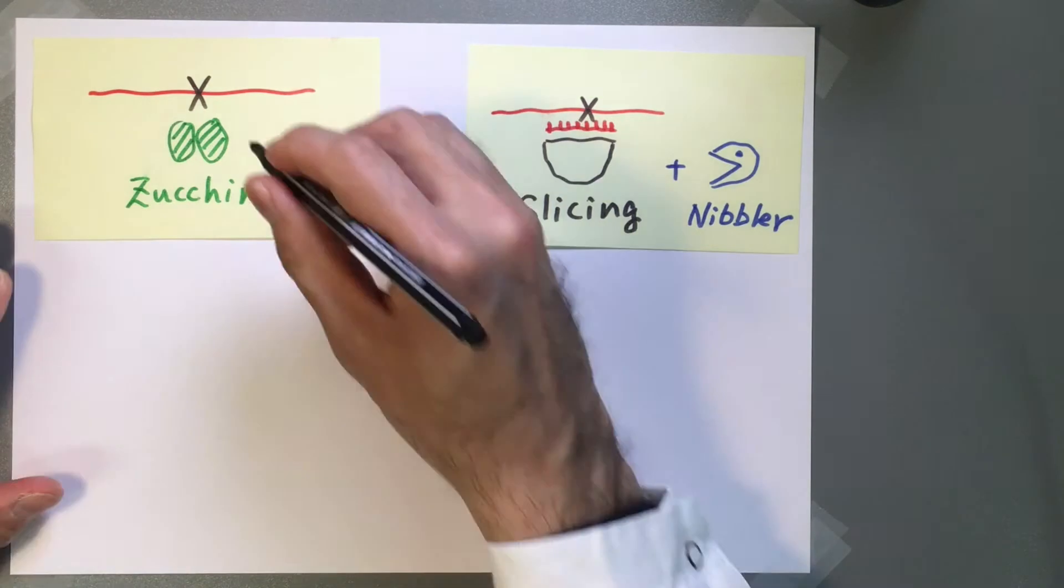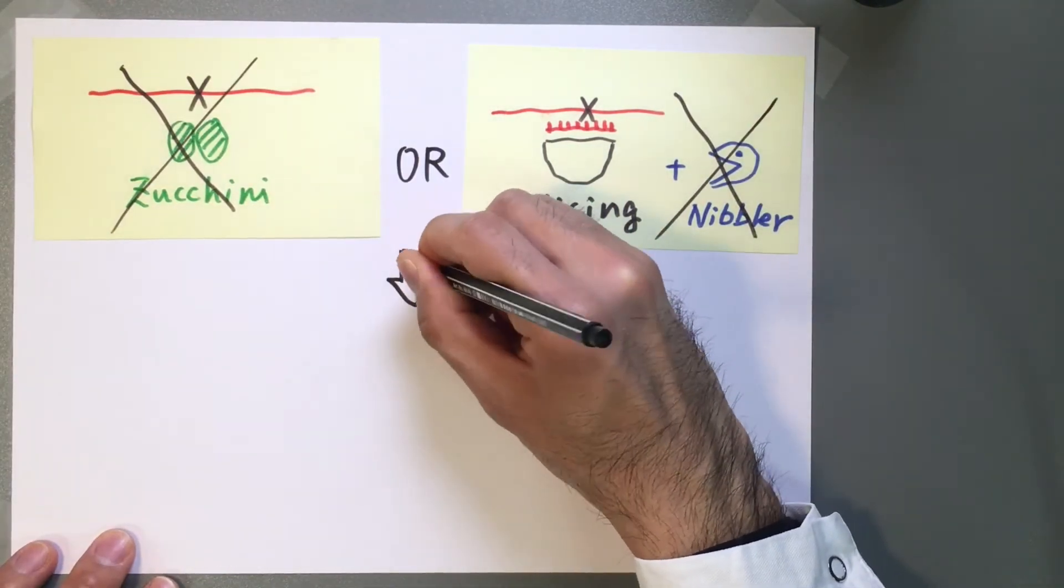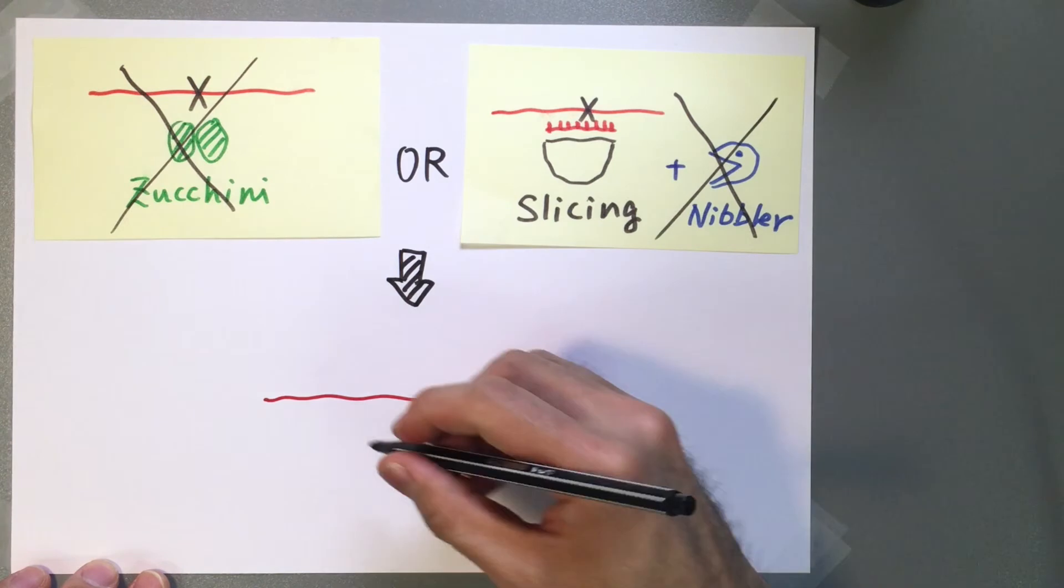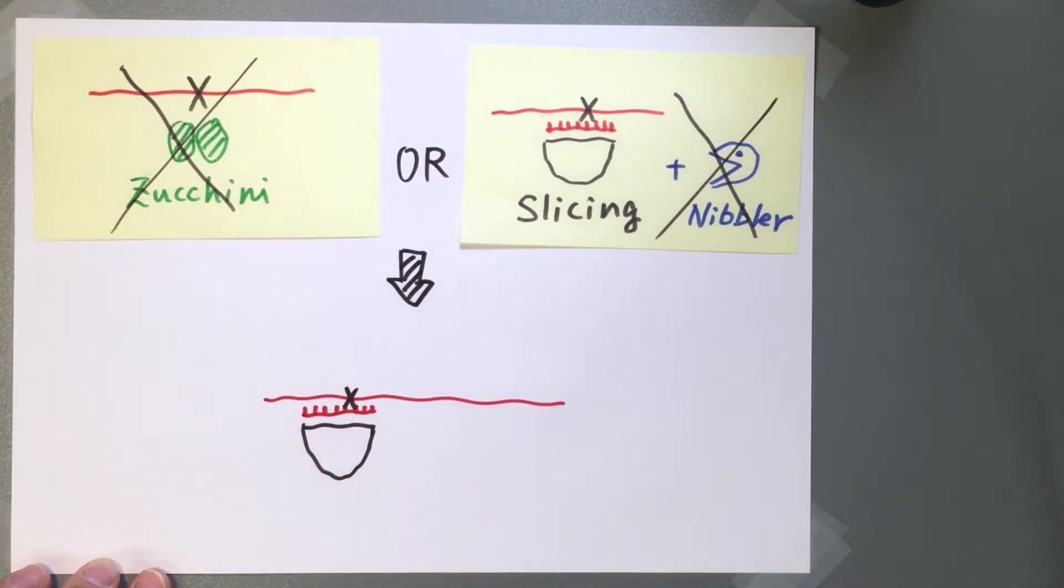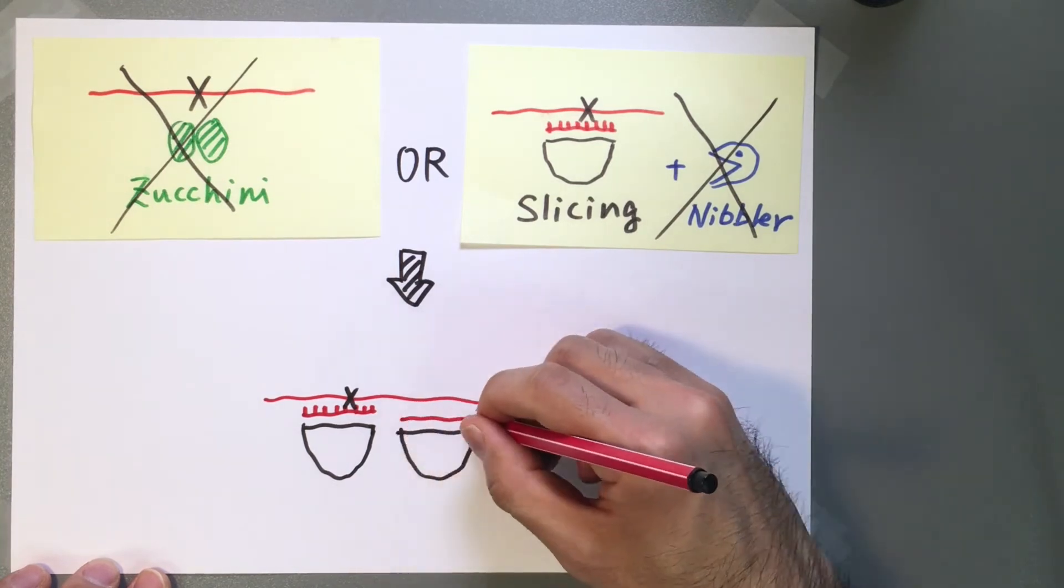By ablating both Zucchini and Nibbler, we show that they act in genetically separate pathways, and we uncover a minimal piRNA biogenesis system where both ends of piRNAs are formed by Aubergine and Ago3.